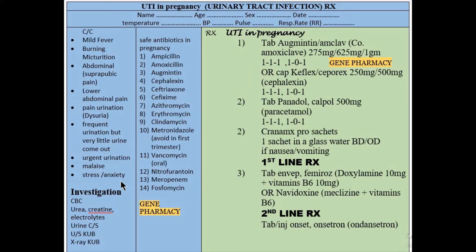When patients present with these symptoms, you will go to investigation. You will do the investigation: a urine test should be done. They will look for pus cells, neutrophils, eosinophils, and WBC white blood cells. They will be considered along with urea, creatinine, electrolytes, urine culture and sensitivity, ultrasound of KUB — kidney, ureter, bladder — and X-ray of kidney, ureter, bladder. These are our investigations for urinary tract infections.